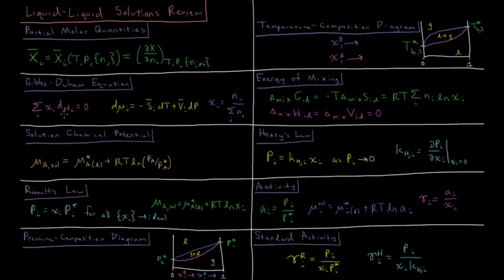The Gibbs-Duhem equation comes from the chemical potential, which is a partial molar quantity — it is the partial molar Gibbs energy. It states that the sum over all components in the solution of their mole fraction times the change in their chemical potential equals zero. The change in chemical potential for a substance equals its negative partial molar entropy times dT plus its partial molar volume times dP. Mole fraction is the number of moles of substance i divided by the total moles of all substances in solution.